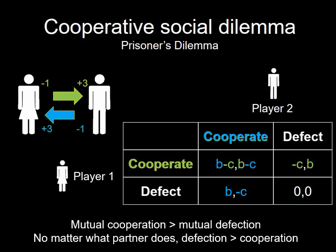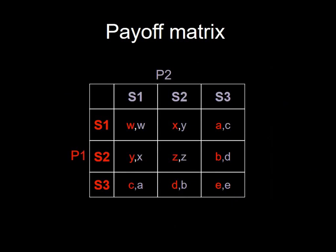This tension — wanting the other person to cooperate but not wanting to cooperate yourself — means that if both people follow self-interest they wind up worse off than if they'd both cooperated. This payoff matrix captures a broad category of social interactions where people can do things helpful to others but costly to themselves. There is a huge literature analyzing how to get into the cooperate-cooperate cell.